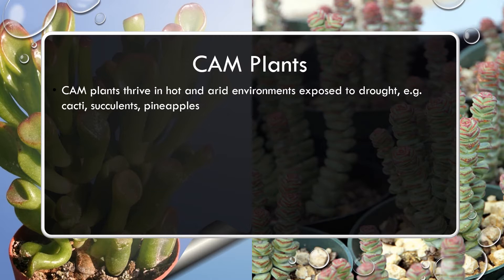CAM plants thrive in hot, arid environments and are often exposed to drought. Examples include cacti, succulents, and pineapples. They're very fancy because they open their stomata at night and close them during the day - very beneficial since in the day where they live it's very hot, and open stomata would cause a lot of water loss they can't afford.